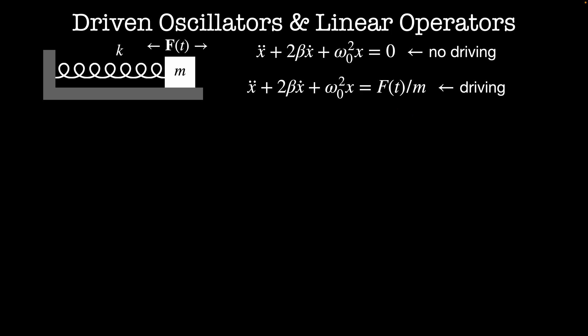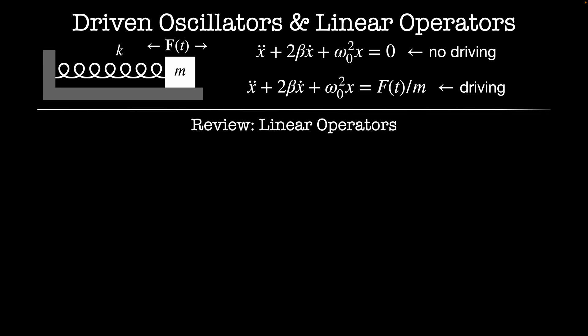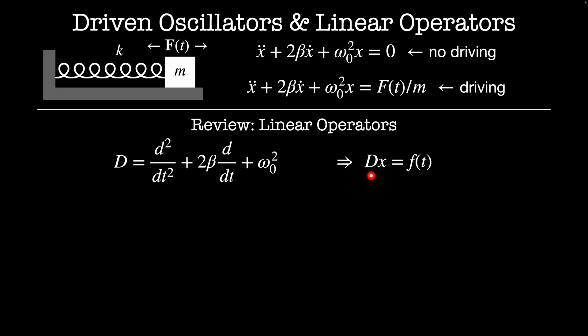Before we get to solving this, I'm going to do a brief aside to discuss linear operators and inhomogeneous equations. When I talk about operators, I'm talking about differential operators. So this is the differential operator for our system: D is equal to d squared by dt squared plus 2 beta d by dt plus omega naught squared. Basically I've pulled out all of the derivatives in my equation of motion, and I'm going to act this as a function on my variable x. So then my equation of motion becomes D acting on x is equal to some function of time.